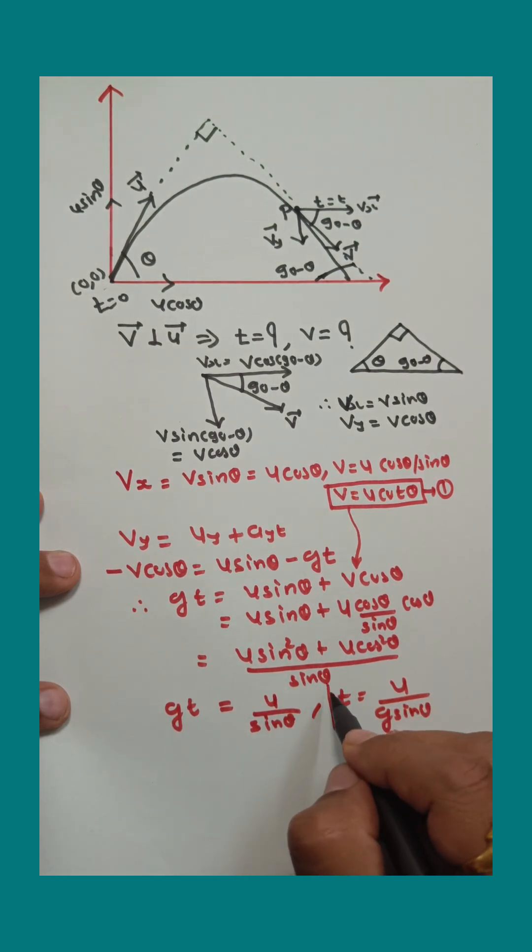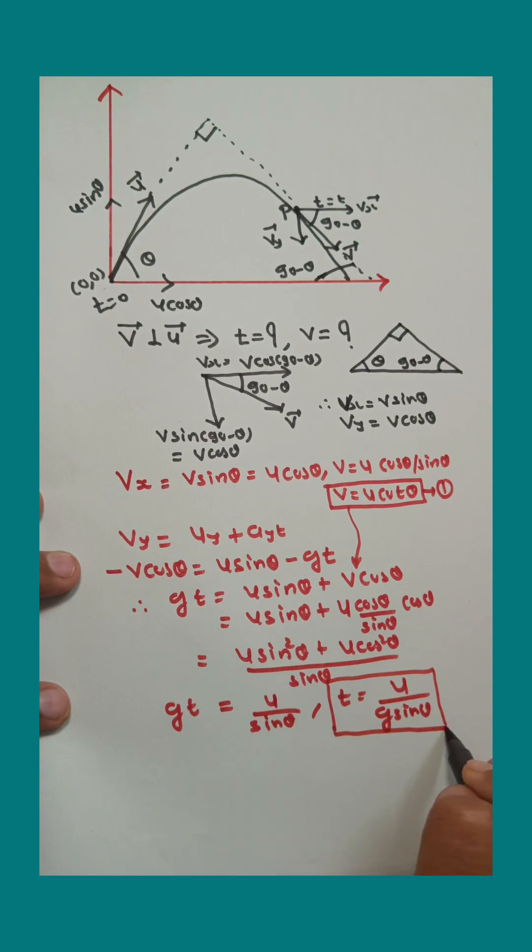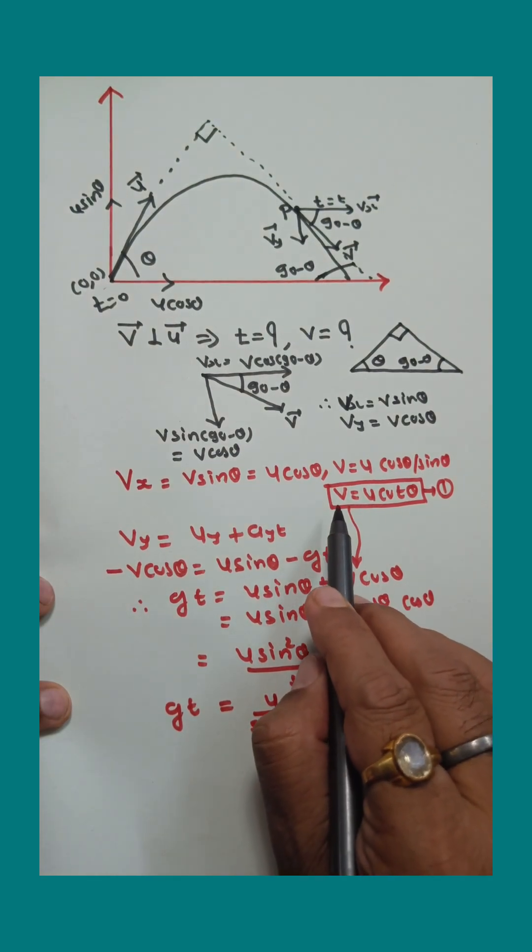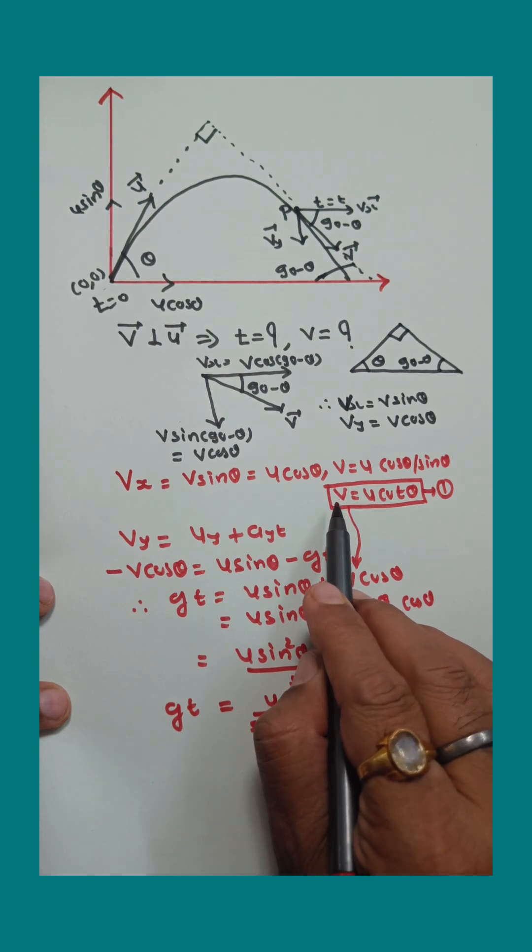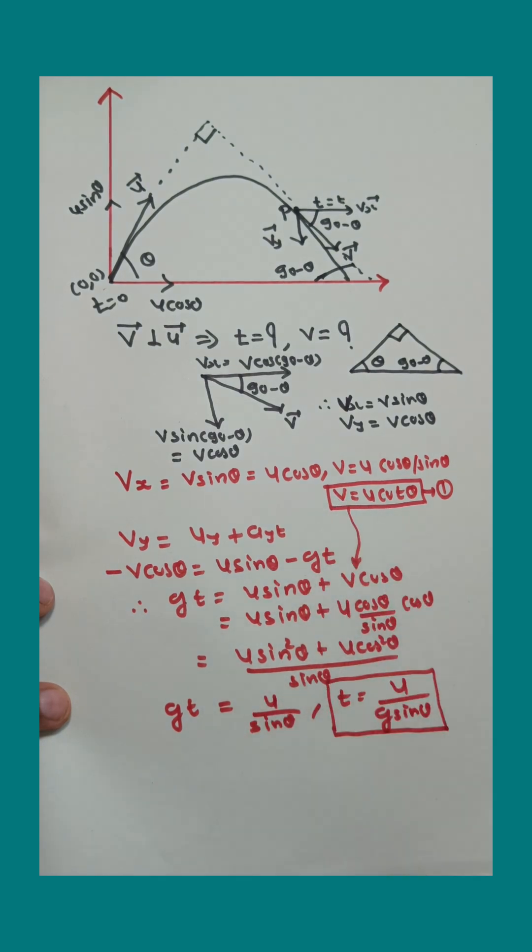It means when time is u upon g sin theta, then the v vector and u vector are perpendicular to each other, and at that time the velocity or magnitude of velocity is u cot theta. Thank you.